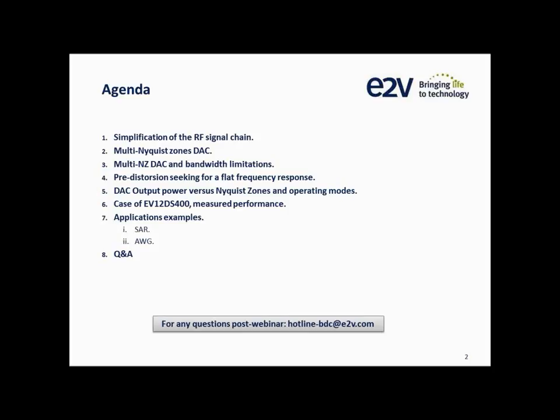On the agenda I will be covering six topics: simplification of the RF signal chain; multi-Nyquist zone DAC converters; multi-Nyquist zone DAC converters and their bandwidth limitations — that's important to understand when designing software-defined microwave systems; pre-distortion to seek a flat frequency response; DAC output power versus Nyquist zones and different operating modes; and a look at the EV12DS400, a recent release from E2V, and its measured performance, plus application examples. For post-webinar questions, our application engineers Mark Ruzier and Rob Stackler will take any technical questions.